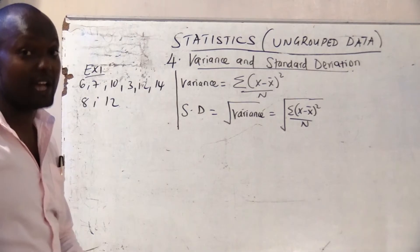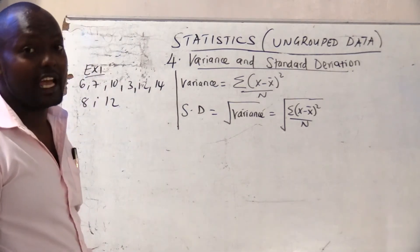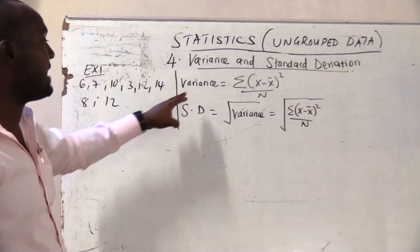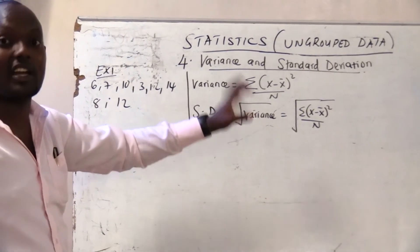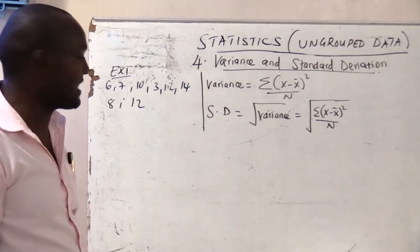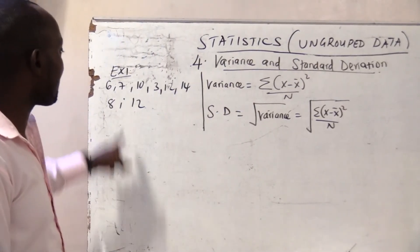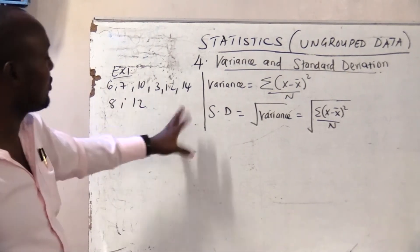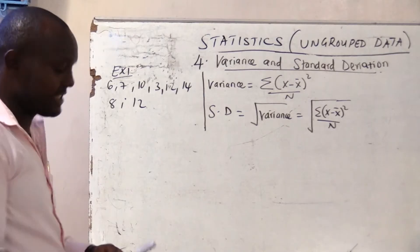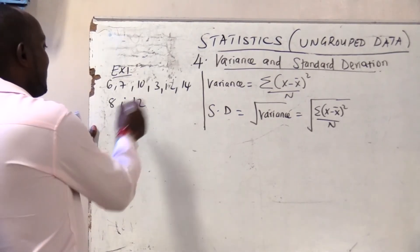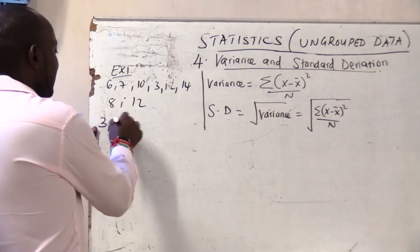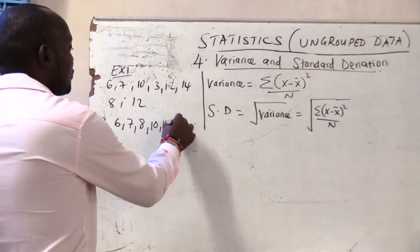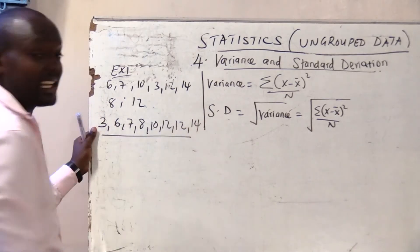I have given you the example data we have been using. You are required to calculate the variance. There are eight data values: 6, 7, 10, 3, 12, 14 — and we arrange them in order: 3, 6, 7, 8, 10, 12, 12, and 14. So these are your data.